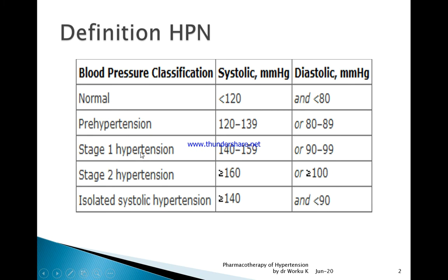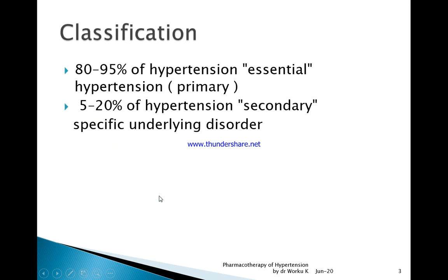Knowing the stage of hypertension is very important in designing management. Hypertension can be classified based on cause into primary and secondary. Primary, sometimes called essential hypertension, is where the cause is not known. Secondary hypertension is due to identifiable secondary causes.